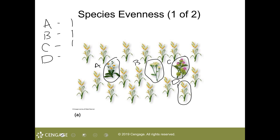For D, there are 17 individuals. So we now have both richness and evenness in this example community. Richness was four, meaning there are four species in this community, and evenness was counted for each species found.